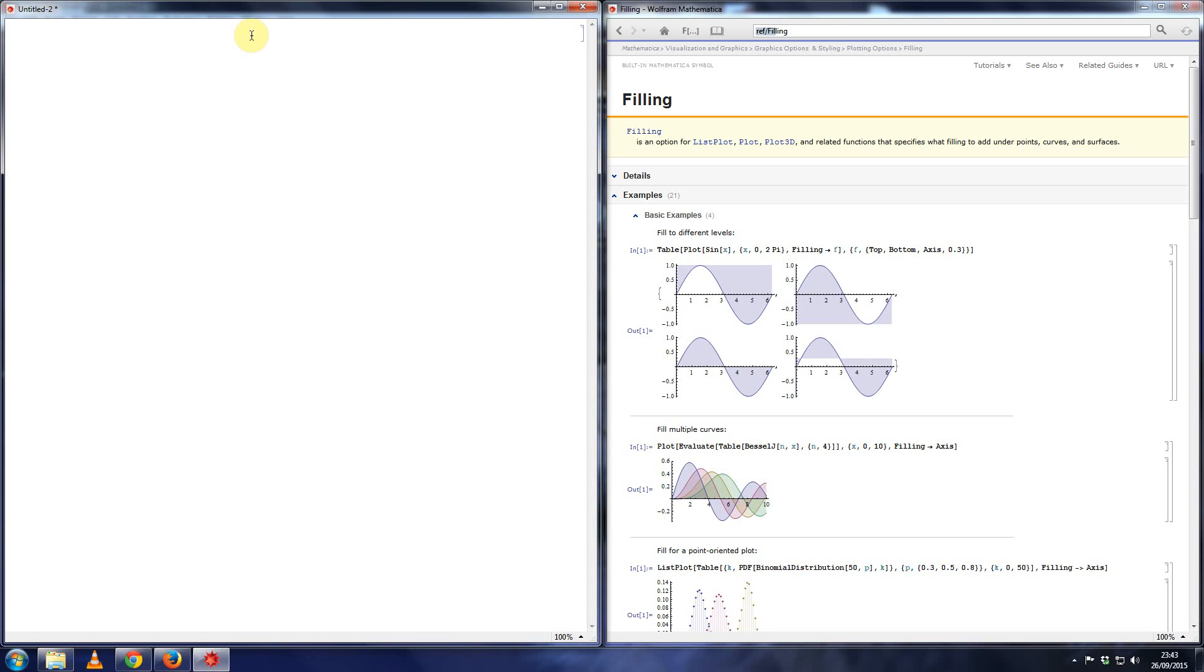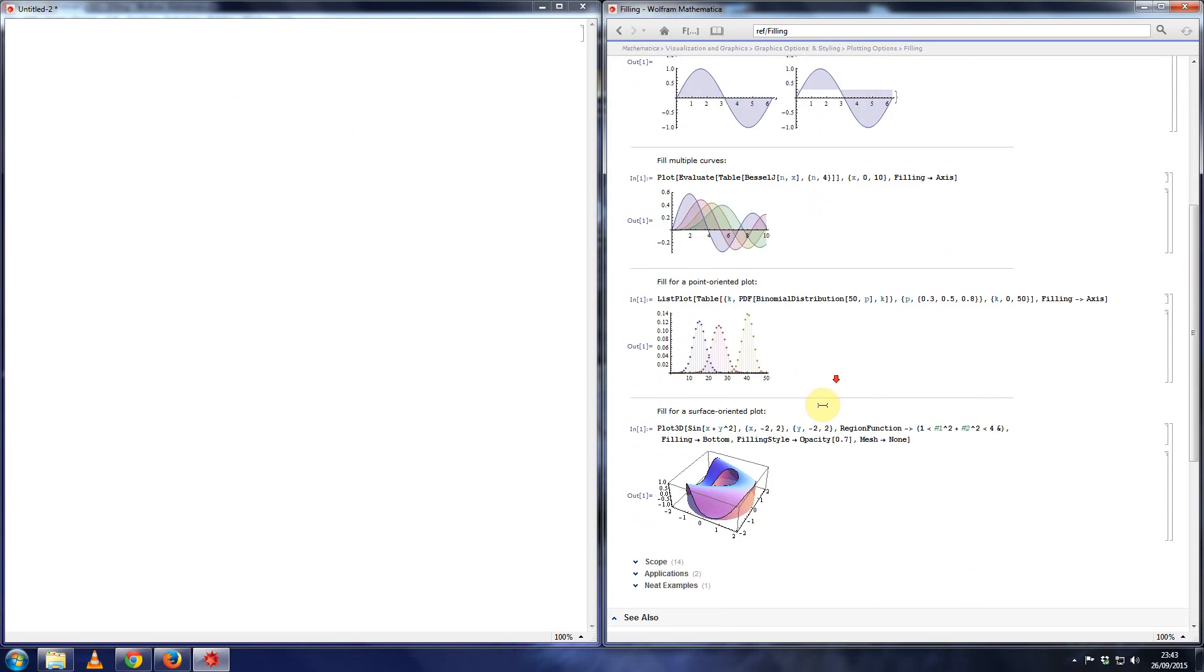Okay, this will be a quick video on using the filling option to shade the area between graphs, either between two graphs, or to shade the area below a function. Now the command for it is called filling. So if you search on the help file for filling, there are a few examples here.